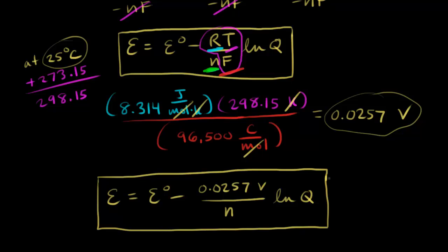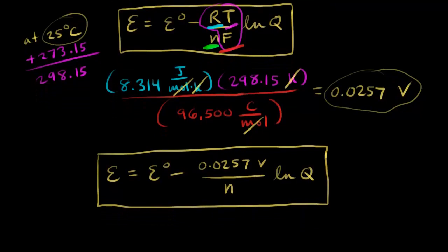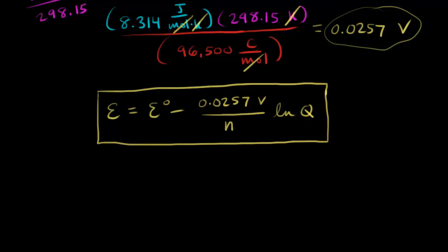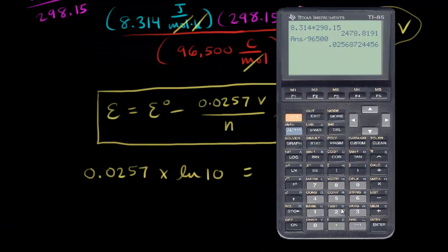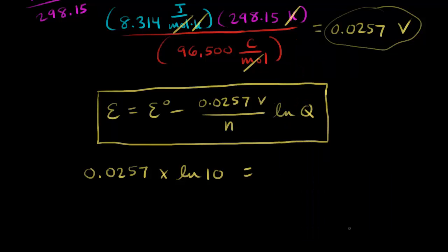At 25 degrees, you can use this form. We can also write this into base 10 logarithm instead of natural log. We also did that in an earlier video. If you're trying to convert this 0.0257, you need to multiply by the natural log of 10. So we have 0.0257 times the natural log of 10. That gives us 0.0592.